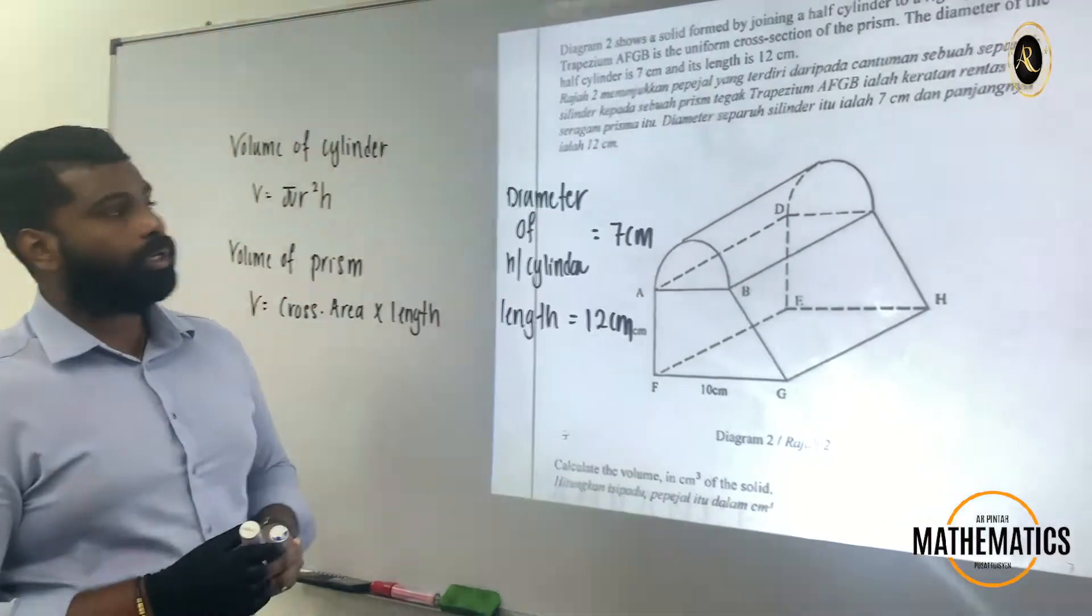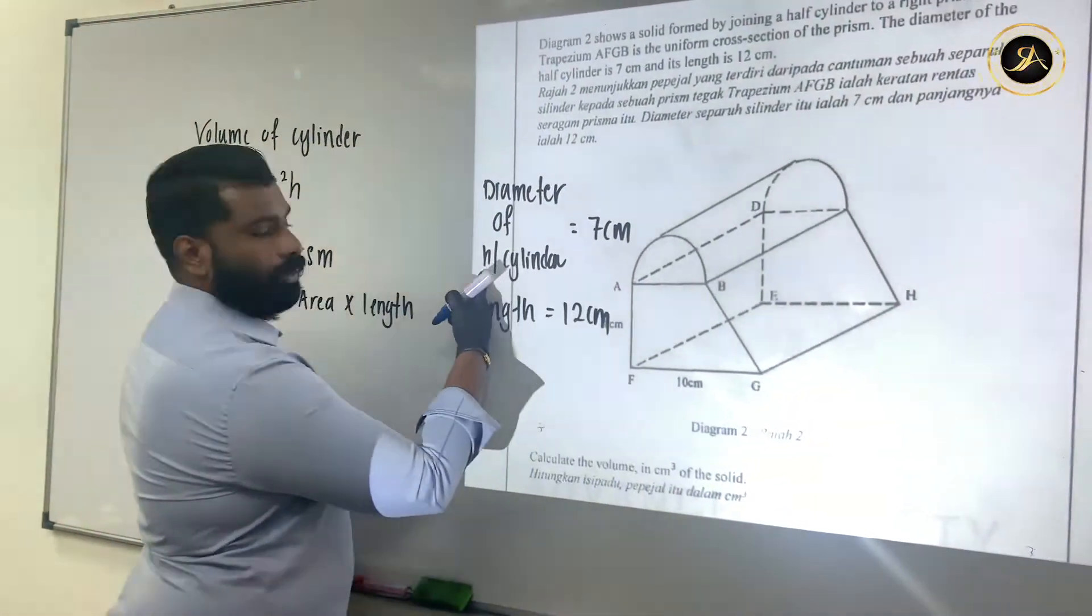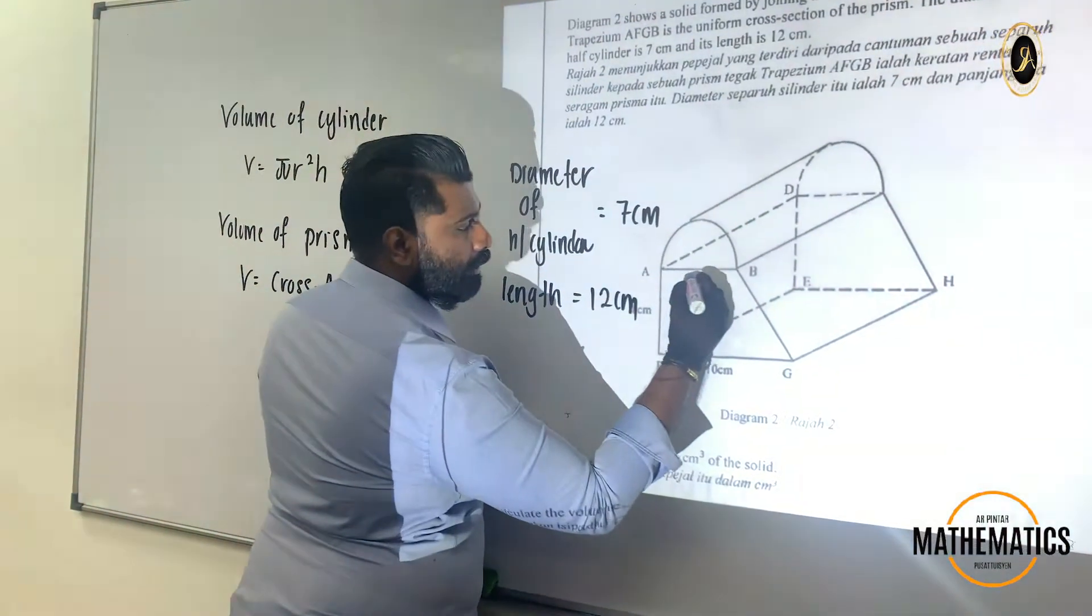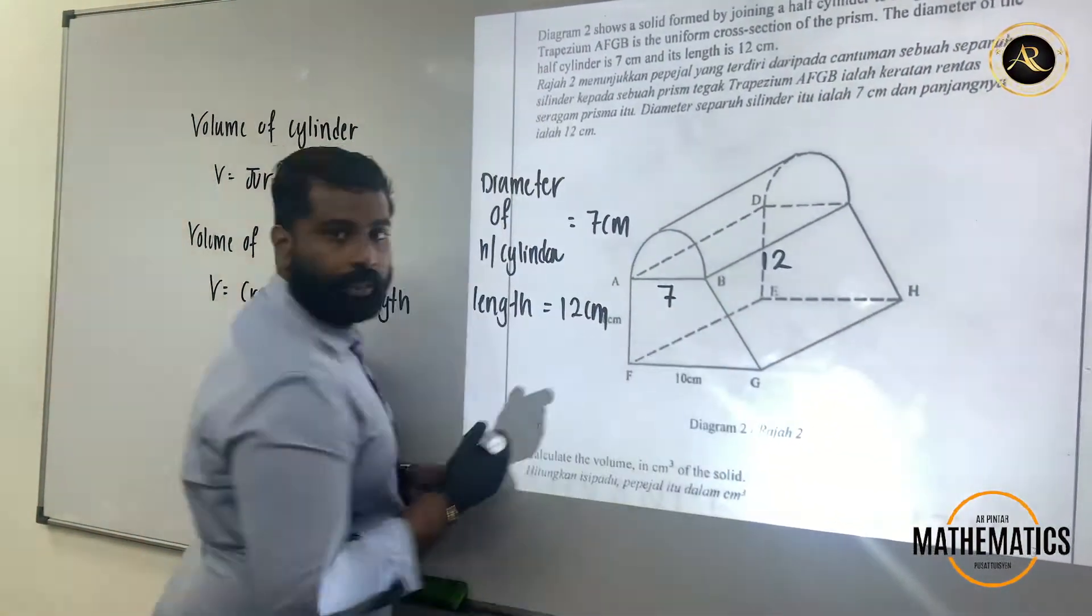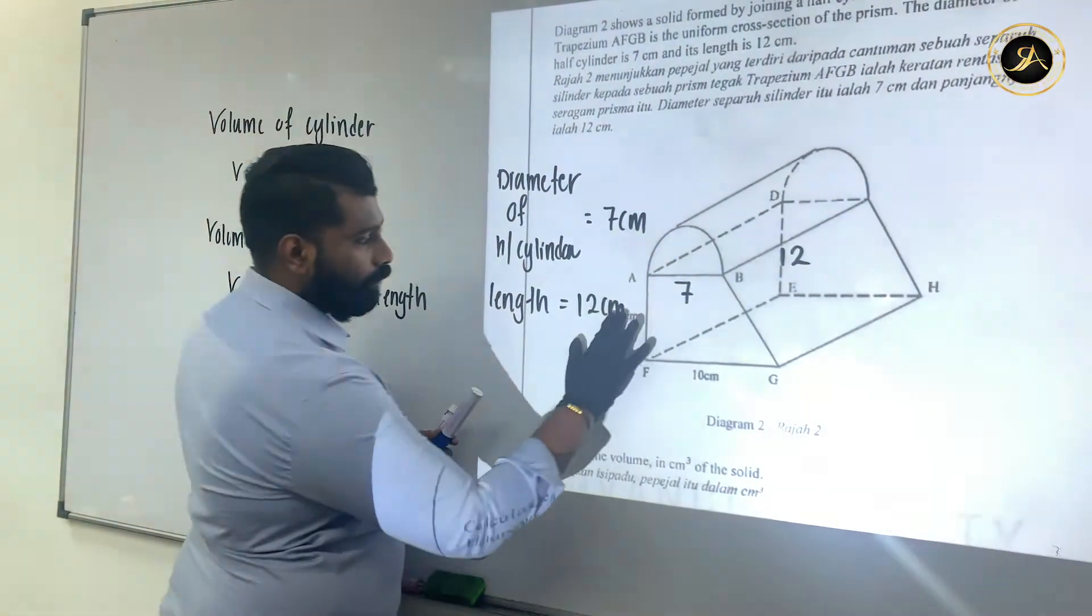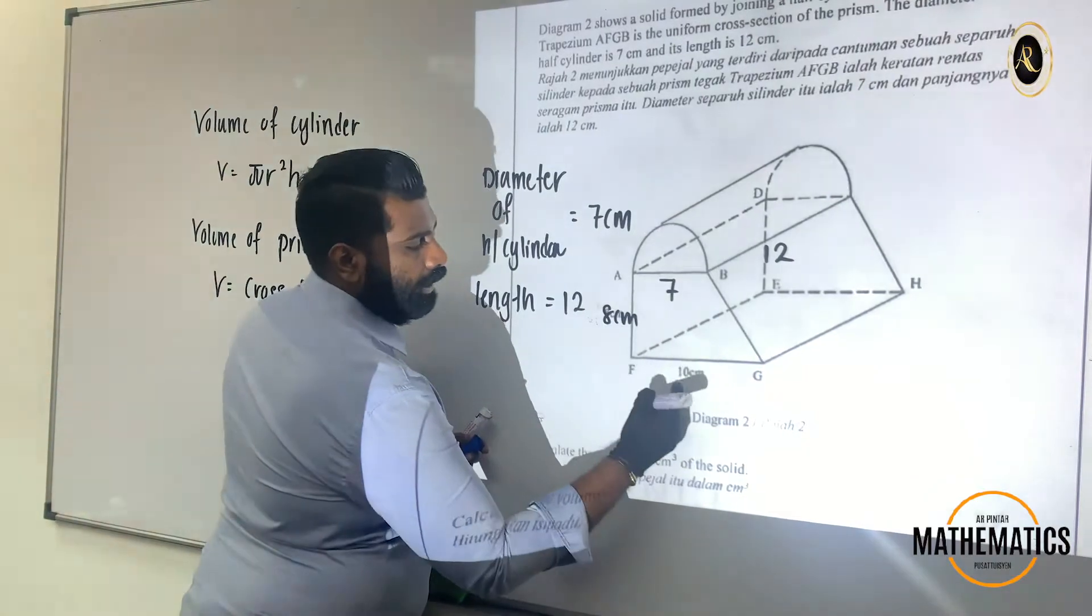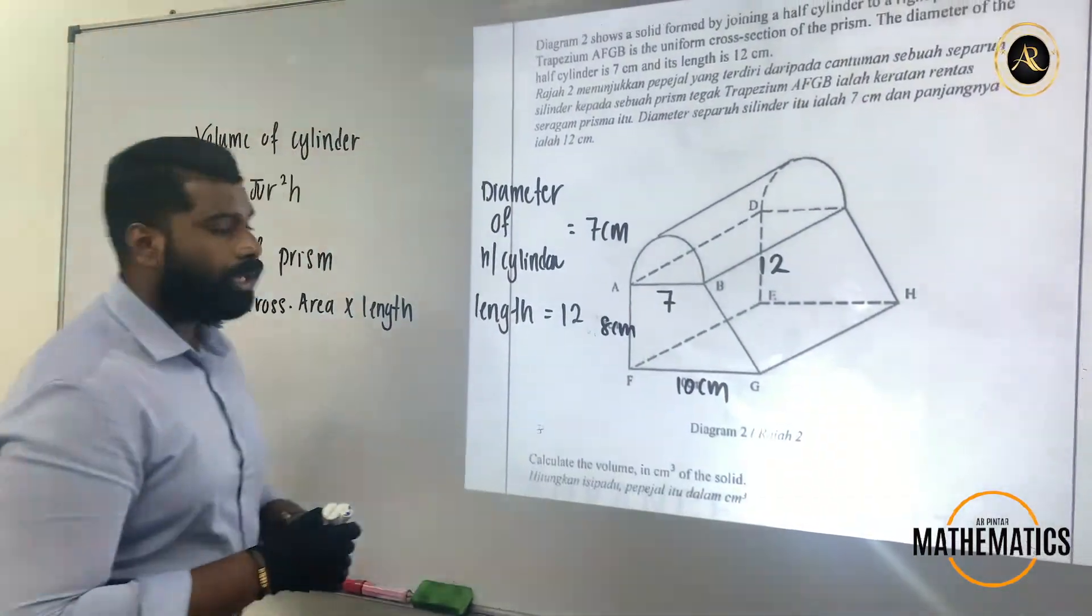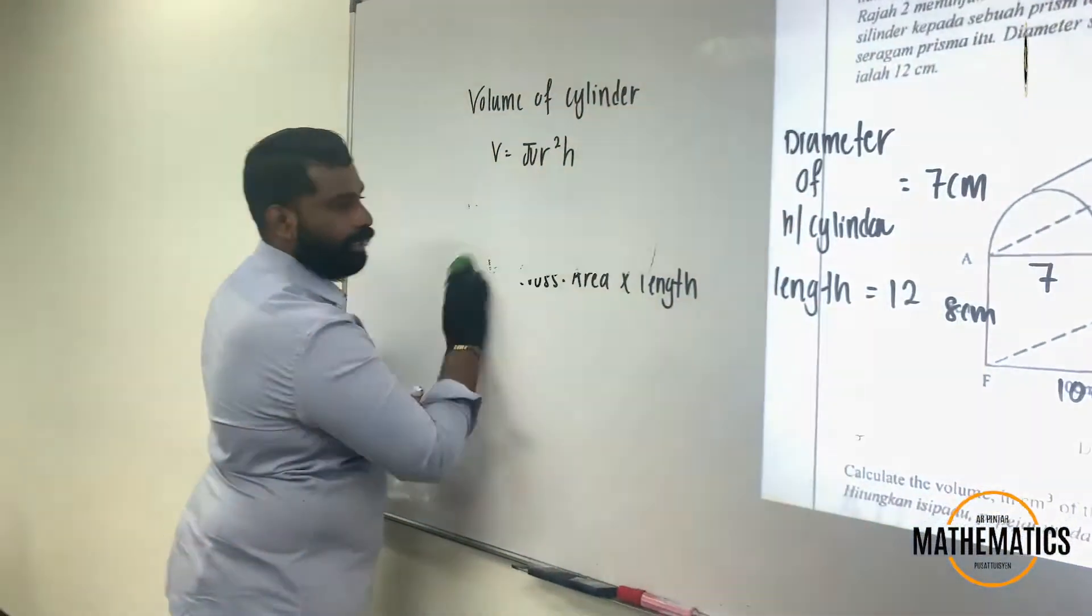Then we are going to look into this very carefully here. The diameter is 7, the length is 12. And then if you notice here, they mention 8 cm and here they mention 10 cm. First, how to do the question?